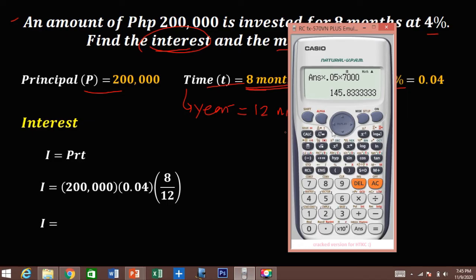Using calculator, so we have 8 divided by 12 equals, times 0.04, times 200,000. So the interest now is...